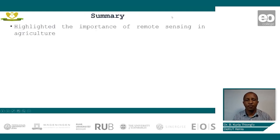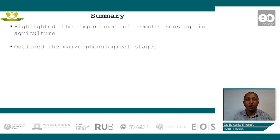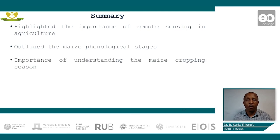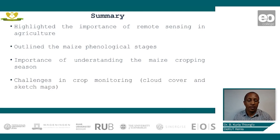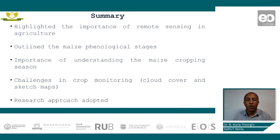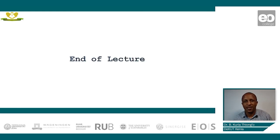In summary, we have been able to highlight the importance of remote sensing in agriculture. We have also outlined the various maize phenological stages and highlighted the importance of understanding the maize cropping season. We have looked at the challenges affecting the crop monitoring process, mainly cloud cover and sketch maps. Finally, we have looked at the research approach adopted. That marks the end of our introductory section. See you shortly in the use case applications.